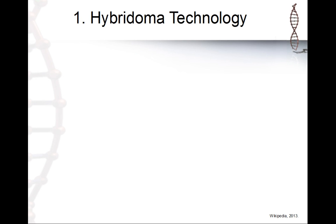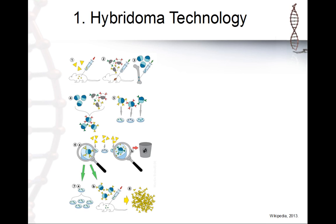In hybridoma technology, you first immunize your mice. The mice generate different kinds of B cells expressing the antibody. Then you collect and select your B cells and from that you get your monoclonal antibody. You can make them grow in cell culture or inject them again into mice to produce it.